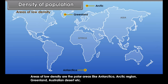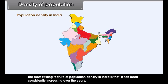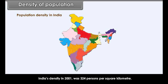Areas of low density are the rough and rugged lands, highly mountainous areas, areas which are too cold or too hot, too wet or too dry. The forested lands and desert lands fall in this category. Areas of low density include the polar areas like Antarctica, the Arctic region, Greenland, and the Australian desert.